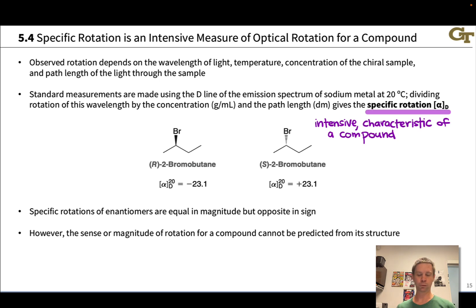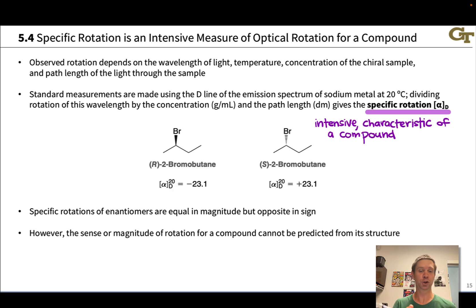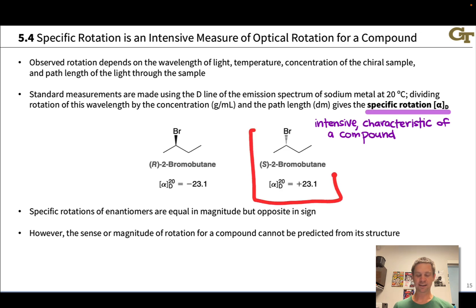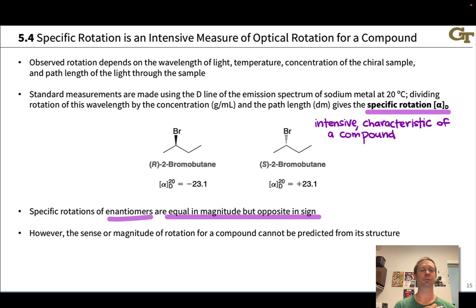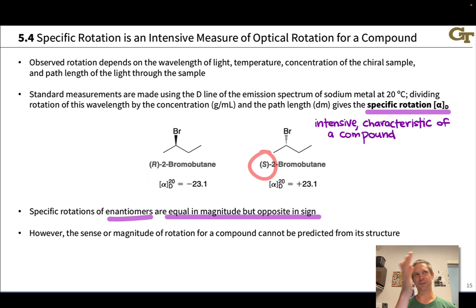For example, R-2-bromobutane — a chiral compound in pure form — has a specific rotation, referred to as alpha-D, of negative 23.1 degrees. Something to notice is that S-2-bromobutane has a specific rotation equal in magnitude but opposite in sign: positive 23.1 degrees. So specific rotations of enantiomers have equal magnitudes but opposite signs. They have mirror image indices of refraction — any difference in index of refraction in the R enantiomer is mirrored with the same difference but opposite sense of rotation in the S enantiomer.